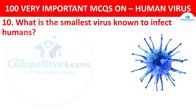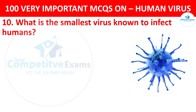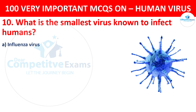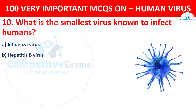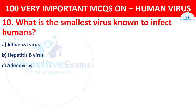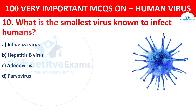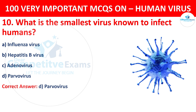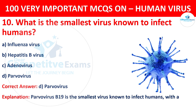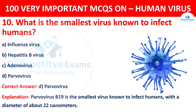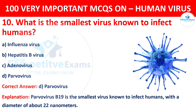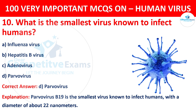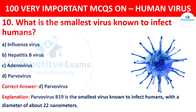Question 10. What is the smallest virus known to infect humans? Your options are influenza virus, Hepatitis B virus, adenovirus, or parvovirus. The correct answer is D, that is parvovirus. Parvovirus B19 is the smallest virus known to infect humans, with a diameter of about 22 nanometers.